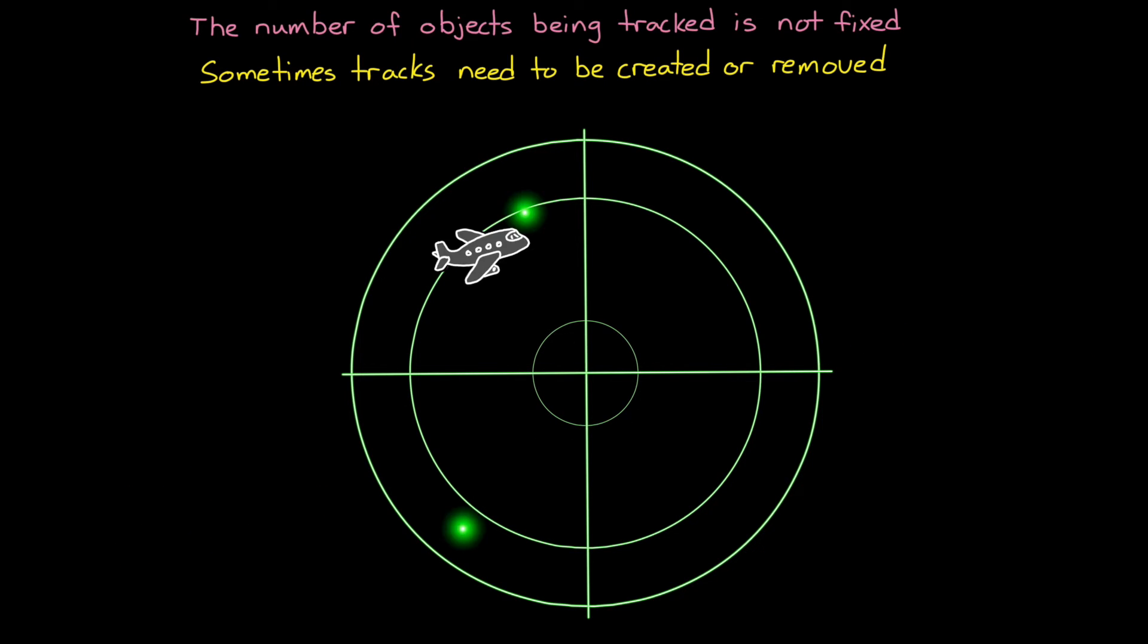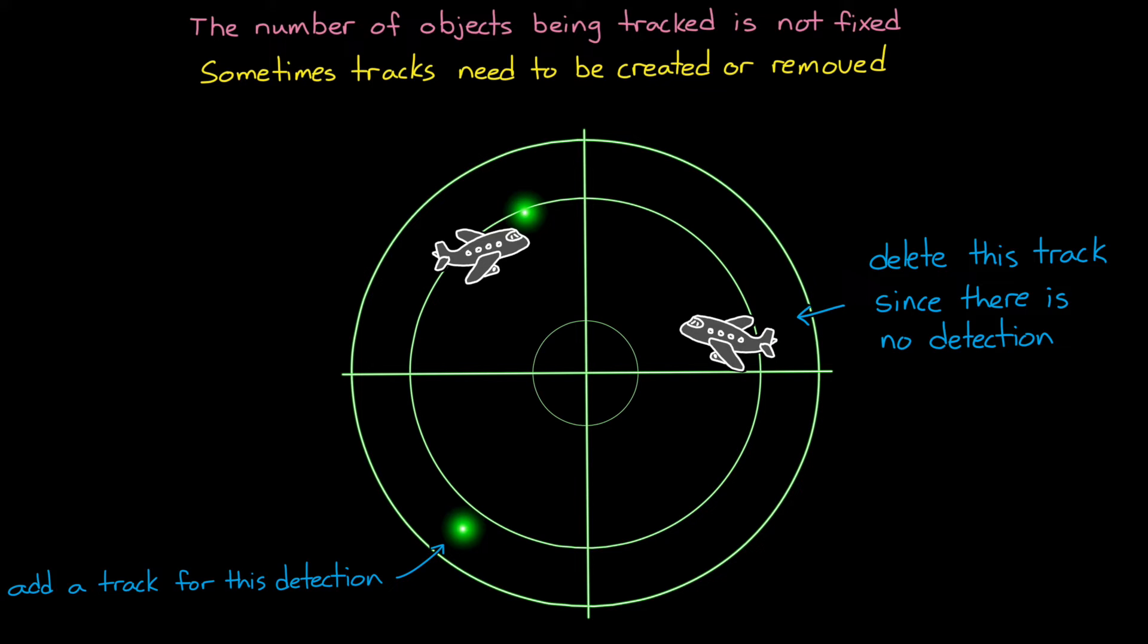And a basic way to approach this is to add a track whenever there is a detection that doesn't match an existing object. And then just delete a track if an existing object is not detected. The thing that complicates this is that sometimes sensors have false positive measurements. They detect something that isn't actually there. And sometimes sensors fail a few times in a row to detect an object that is actually there.